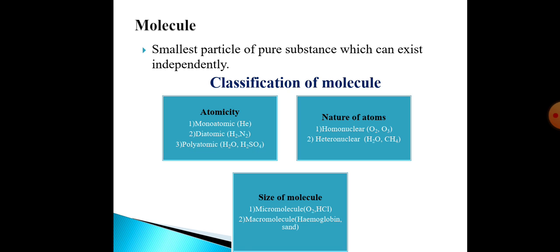On the basis of size, molecules can be classified into two categories: micromolecules and macromolecules. Micromolecules are small in size and have low masses — for example oxygen, methane and HCl. Macromolecules are large in size and have very high masses — for example sand, diamond and hemoglobin. One hemoglobin molecule contains more than 10,000 atoms, and the mass of one hemoglobin molecule is about 68,000 times heavier than a hydrogen atom.